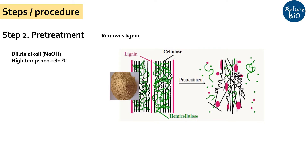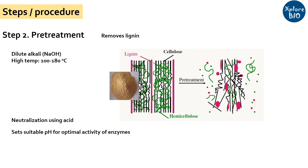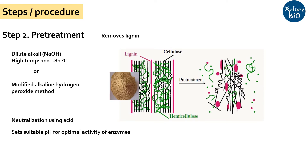Following pretreatment, acid like sulfuric acid is added to neutralize the alkali. This is important as enzymes involved in cellulose degradation and fermentation work at their optimal pH, which needs to be adjusted by adding the acid. The pretreatment can also be done with a modified alkaline hydrogen peroxide method with different conditions.